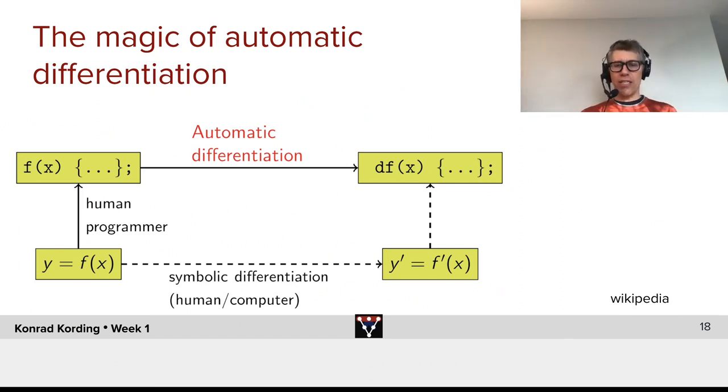So what's automatic differentiation? What we could do is we can symbolically differentiate this and implement the derivatives as a function. Automatic differentiation is basically going directly from the PyTorch program that implements the function to a program that implements the derivative of that. And this transition is, as we will see, very efficient and so much so, in fact, that no one goes this route.